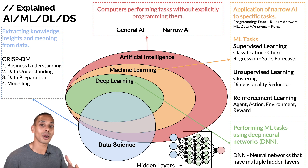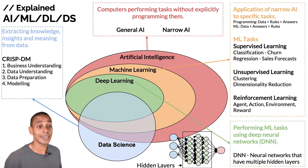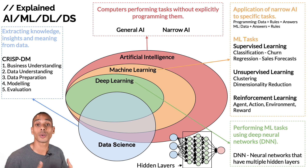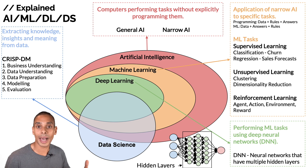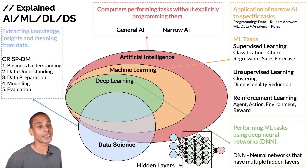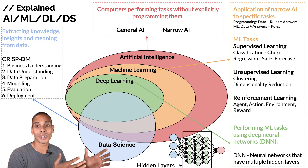Next is modeling — training your machine learning algorithms to perform well on a specific task. Once we've trained our models, we move to evaluation: checking whether our model is likely to perform well once deployed in the real world, using specific evaluation metrics. Finally, deployment: releasing the model as a REST API, containerizing it, or saving it as a binary so it can be used elsewhere.